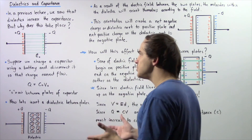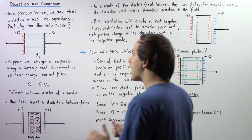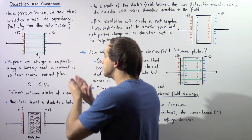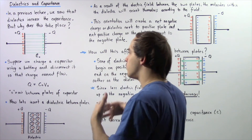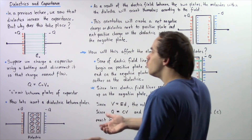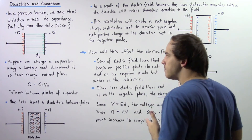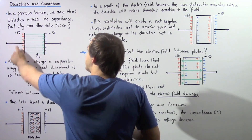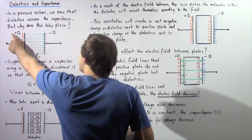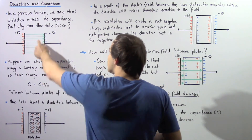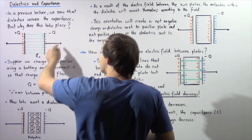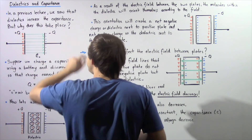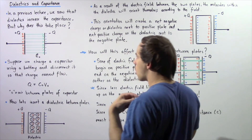So initially, once our parallel plate capacitor is fully charged, we remove our battery. This plate will have a positive Q charge and this plate will have a negative Q charge.